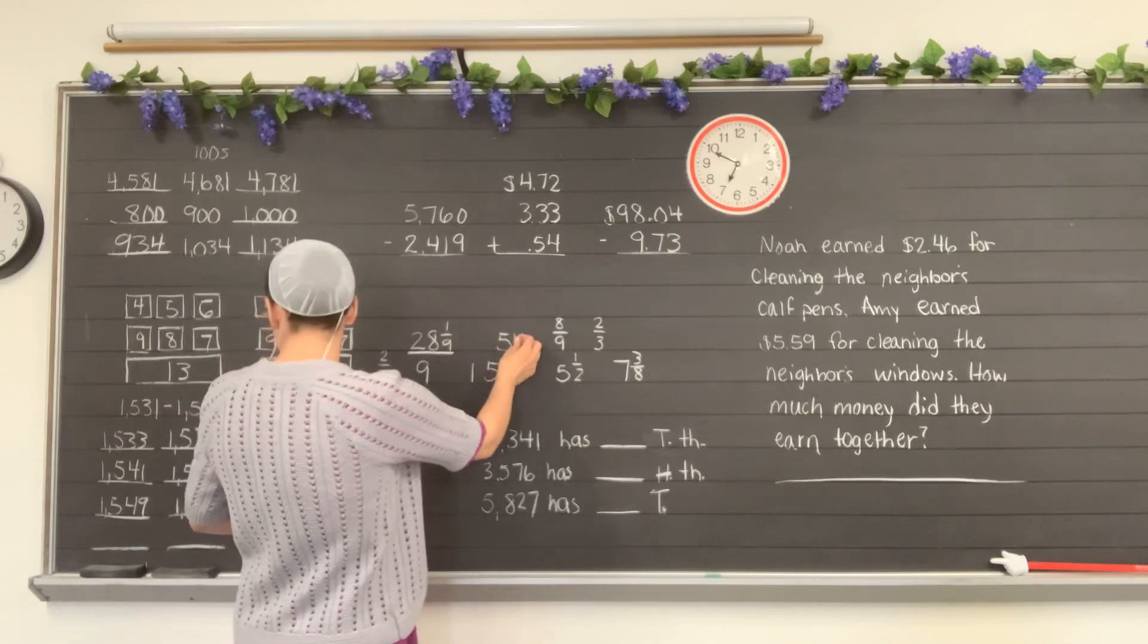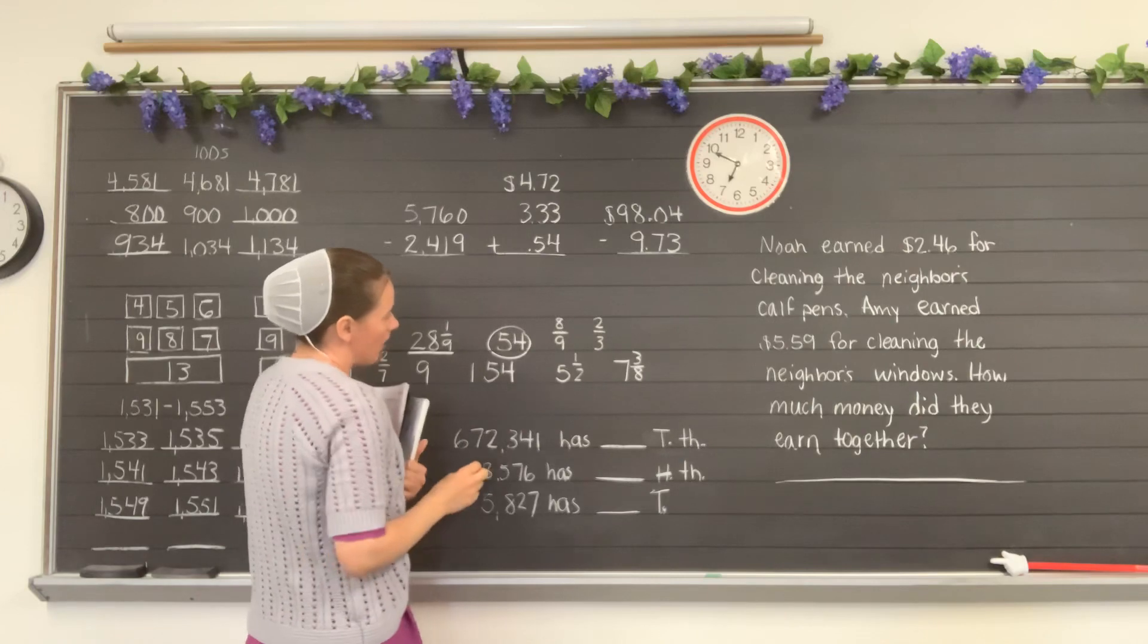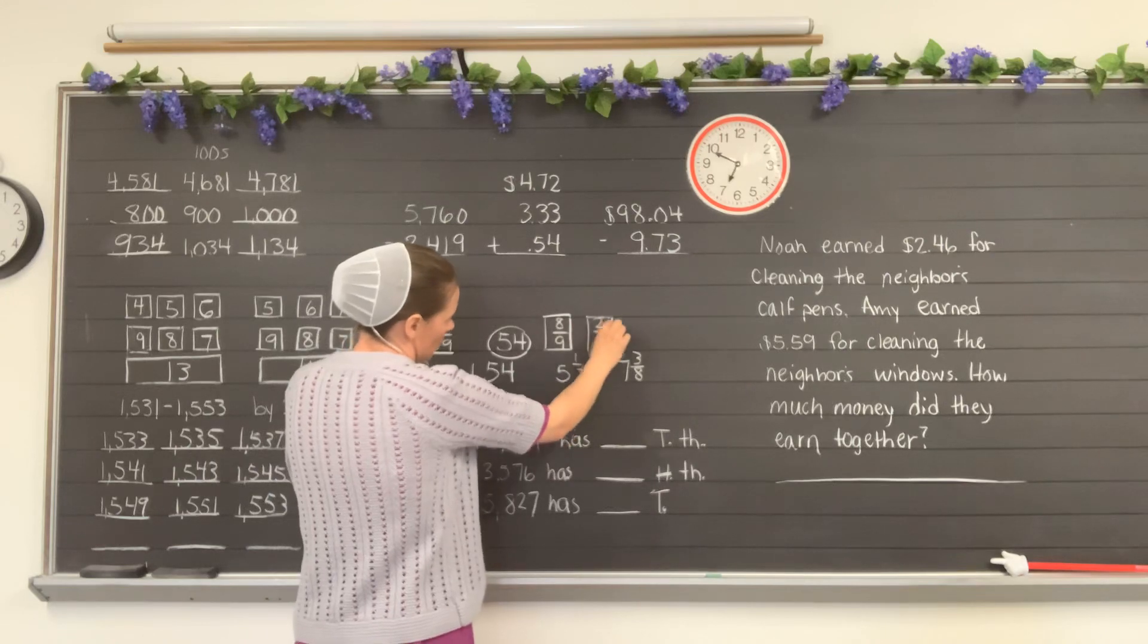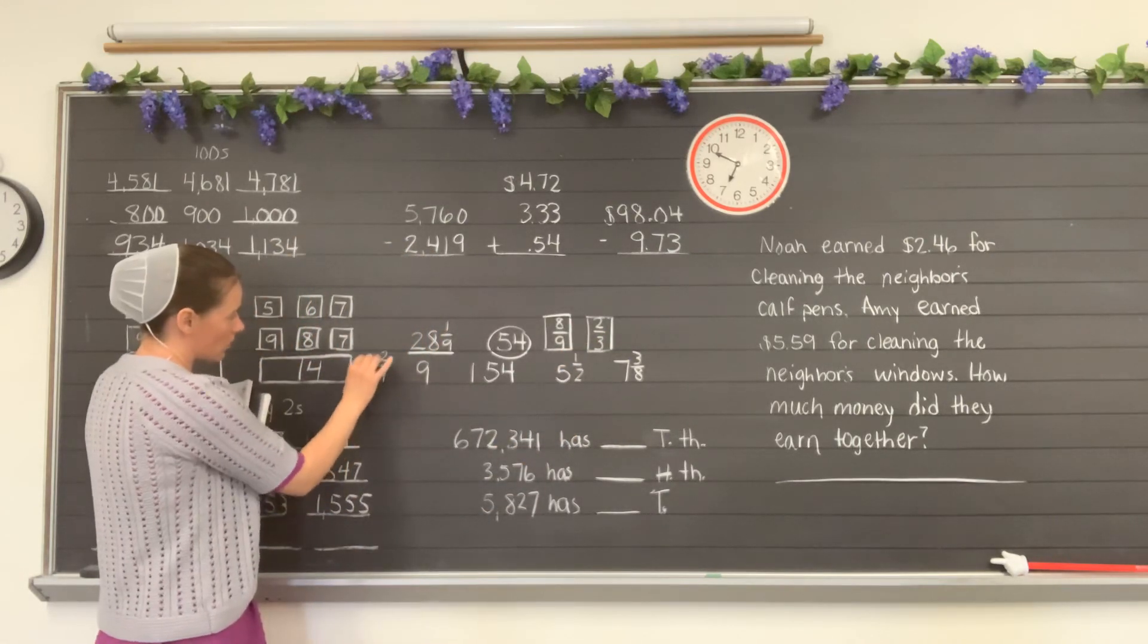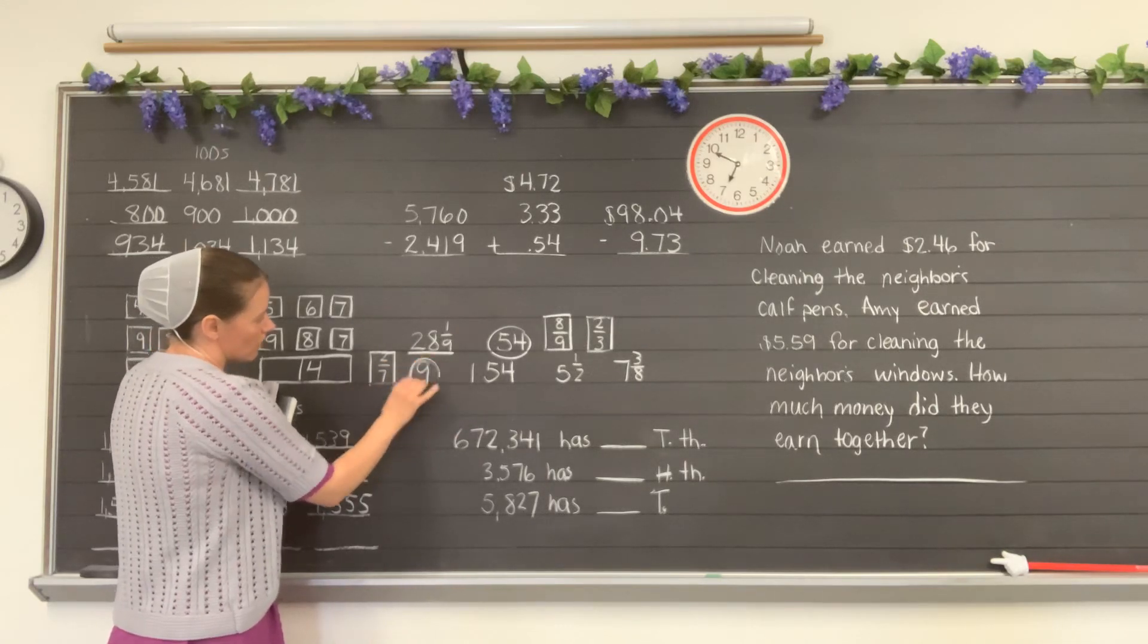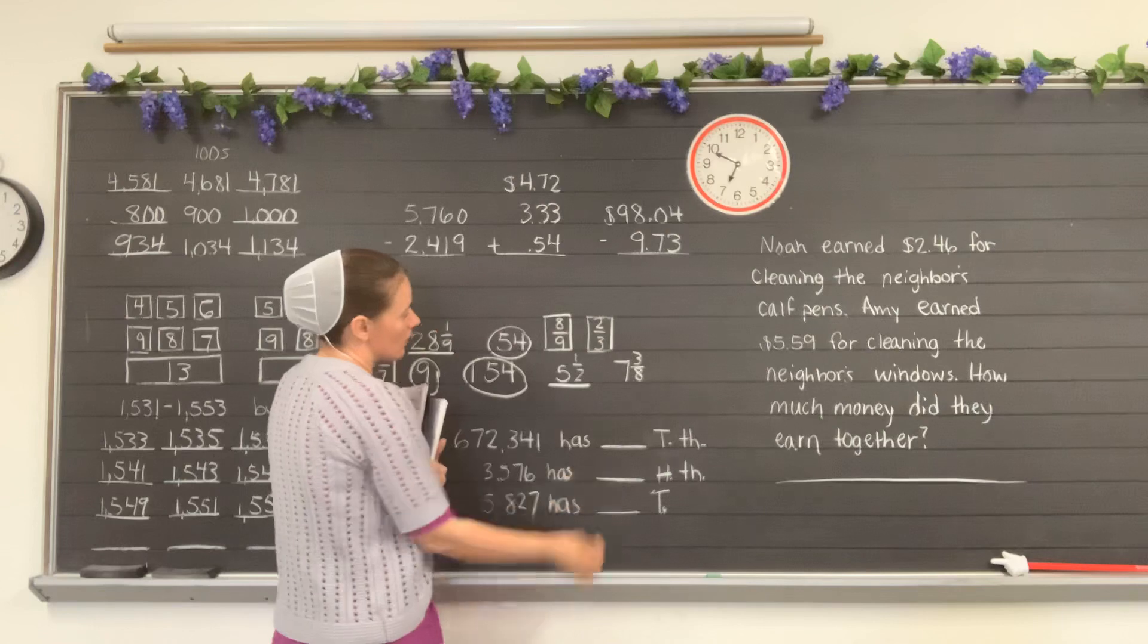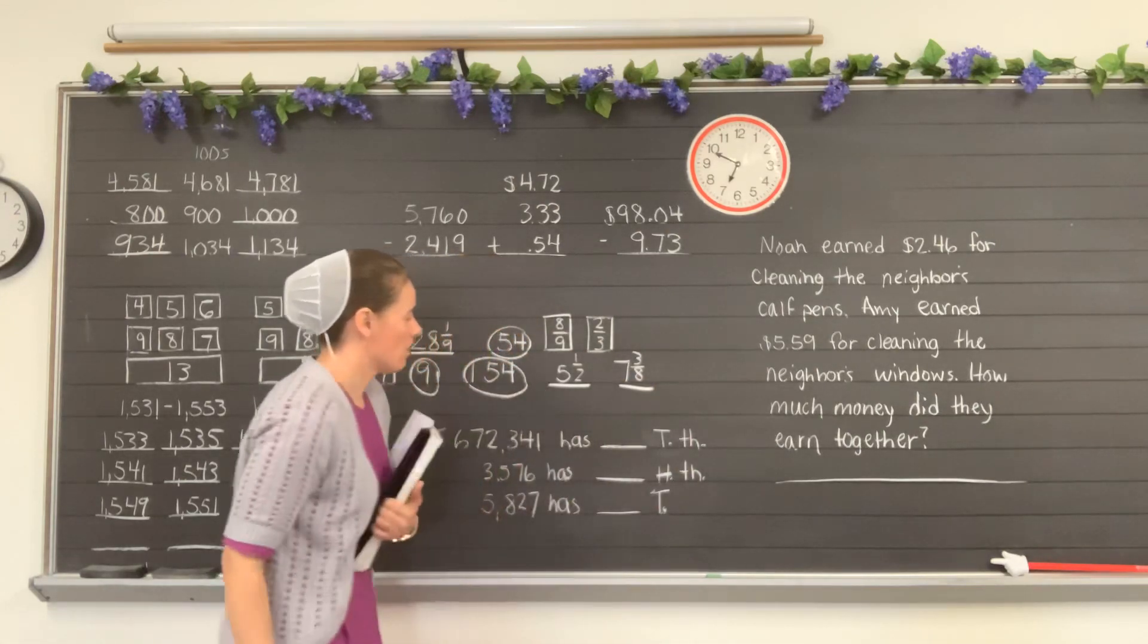54 here is a whole number, so I would circle the whole numbers. 8 ninths is a fraction, so I'm going to put a box around it. 2 thirds is a fraction, so it will get a box. 2 sevenths is a fraction, so it gets a box. 9 is a whole number so it gets a circle. 154 is a whole number, it gets a circle. 5 and 1 half is a mixed number, so it gets underlined. 7 and 2 thirds is a mixed number, it gets underlined.